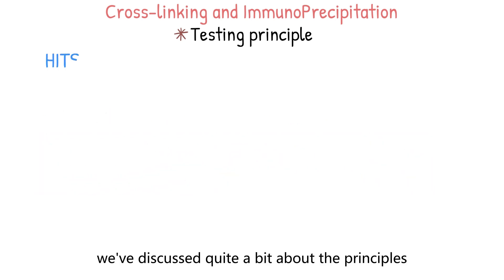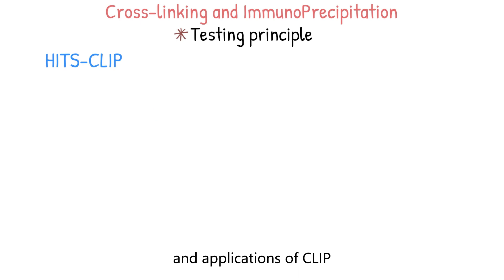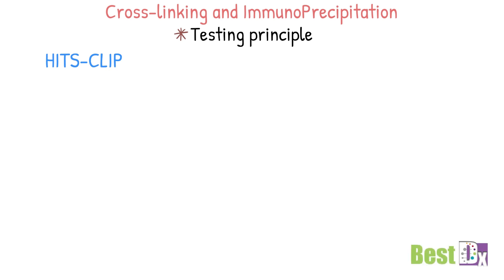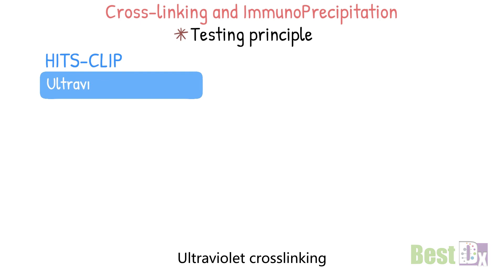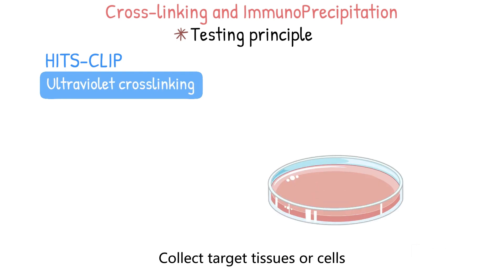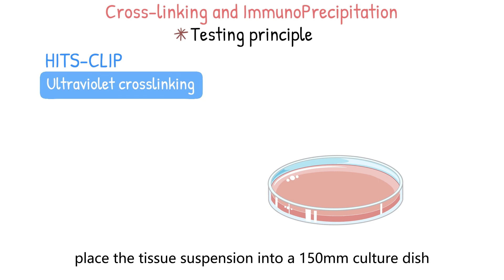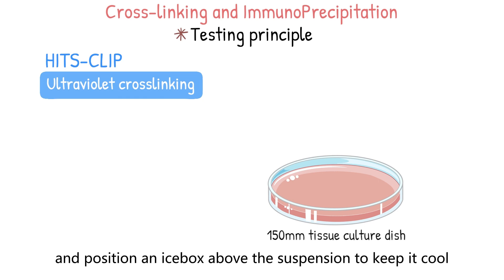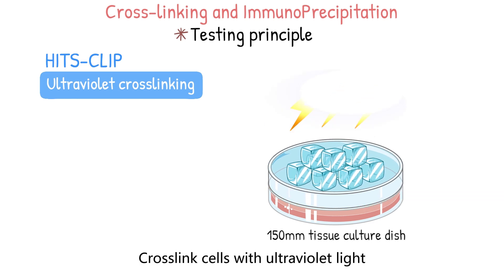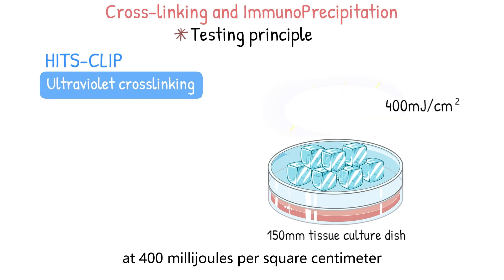We've discussed the principles and applications of CLIP, so now let's dive into the detailed steps of a complete experiment using HITSCLIP as an example. Step 1: Ultraviolet crosslinking. Collect target tissues or cells, place the tissue suspension into a 150mm culture dish, and position an icebox above the suspension to keep it cool. Crosslink cells with ultraviolet light at 400 mJ per square centimeter.